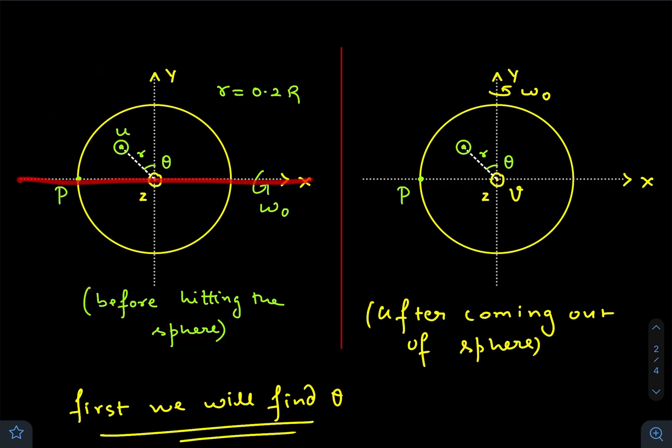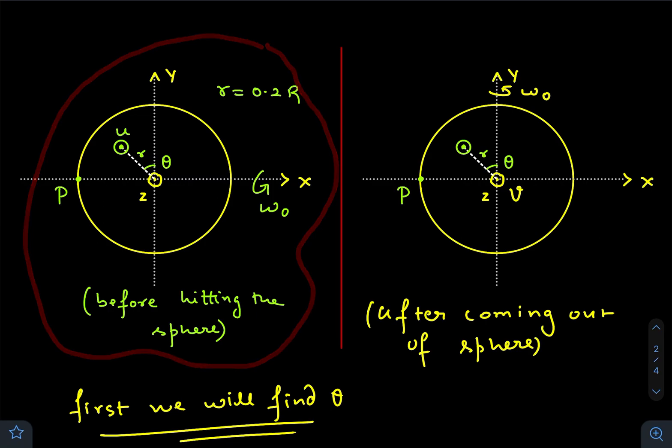This is the x-axis, this is the y-axis, and the z-axis is pointing out of the screen. This diagram is before the bullet hits the sphere.